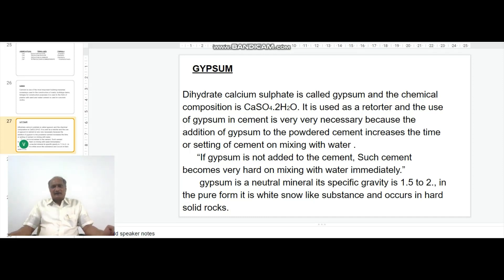The chemical composition of gypsum is CaSO4·2H2O, dihydrated calcium sulphate, which is called gypsum.